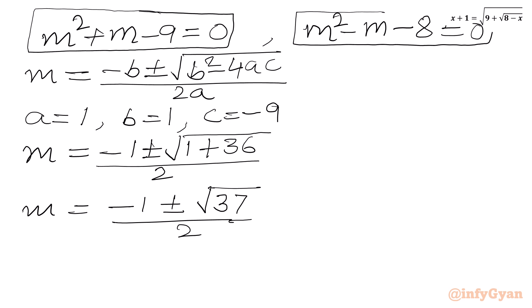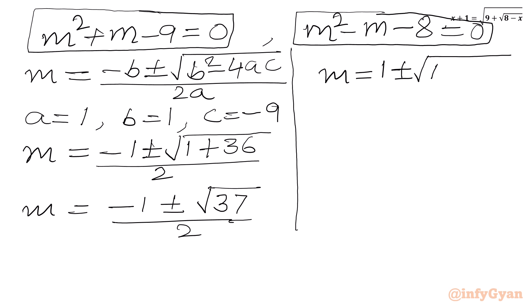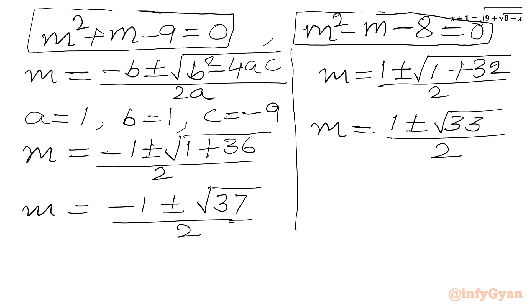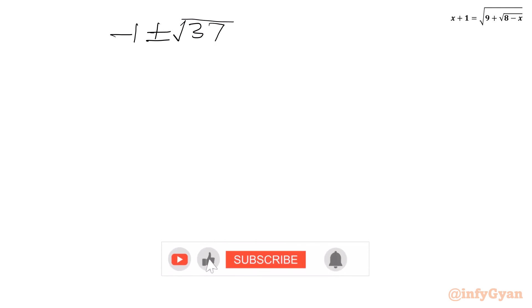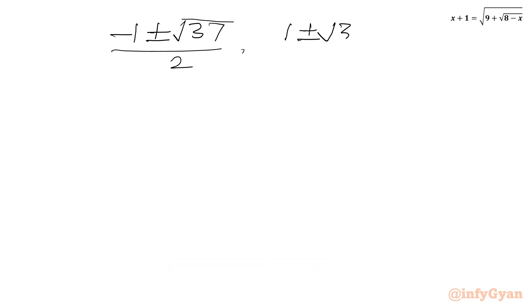For the second quadratic m²−m−8=0, using the quadratic formula again: m equals (1 ± √(1+32)) / 2, giving m equals (1 ± √33) / 2. So we have four solutions in terms of m.